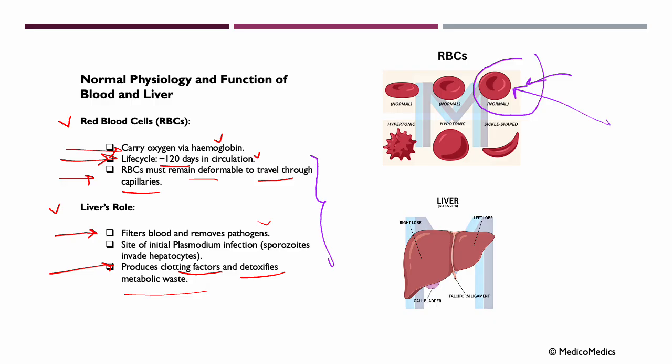Furthermore, the parasite destroys the red blood cells because it multiplies inside them, and this leads to the anemia we see clinically in malaria patients. The liver plays a critical role in the malaria life cycle, because when a mosquito injects plasmodium sporozoites, these first travel to the liver, where they invade liver cells and multiply silently before entering the bloodstream and affecting our red blood cells. The liver stage is crucial because it's the window when the infection is asymptomatic but expanding.